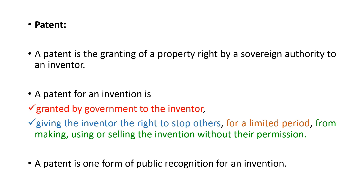A patent is granting the property right by a sovereign authority to the inventor — that is, granting the property right because he has developed that invention. The authority gives the property right to the inventor. A patent for an invention is granted by the government to the inventor, also giving the inventor the right to stop others for a limited period from making, using, or selling the invention without their permission.